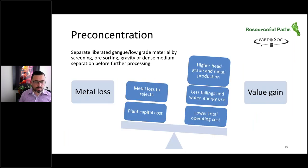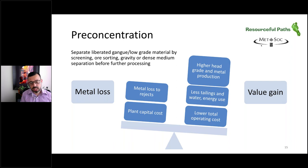I now want to turn to the topic of pre-concentration. This is a technique where we separate liberated gangue or low-grade material from an ore stream by various techniques including screening or sorting, dense medium separation, etc. This is really a balancing act — how effectively can we reject material without losing too much metal? What's the cost of putting in such a processing facility versus the gain that comes from a higher head grade feeding downstream processes, generation of less tailings, less water and energy use, and potentially lower overall operating cost? This needs to be assessed on a case-by-case basis.